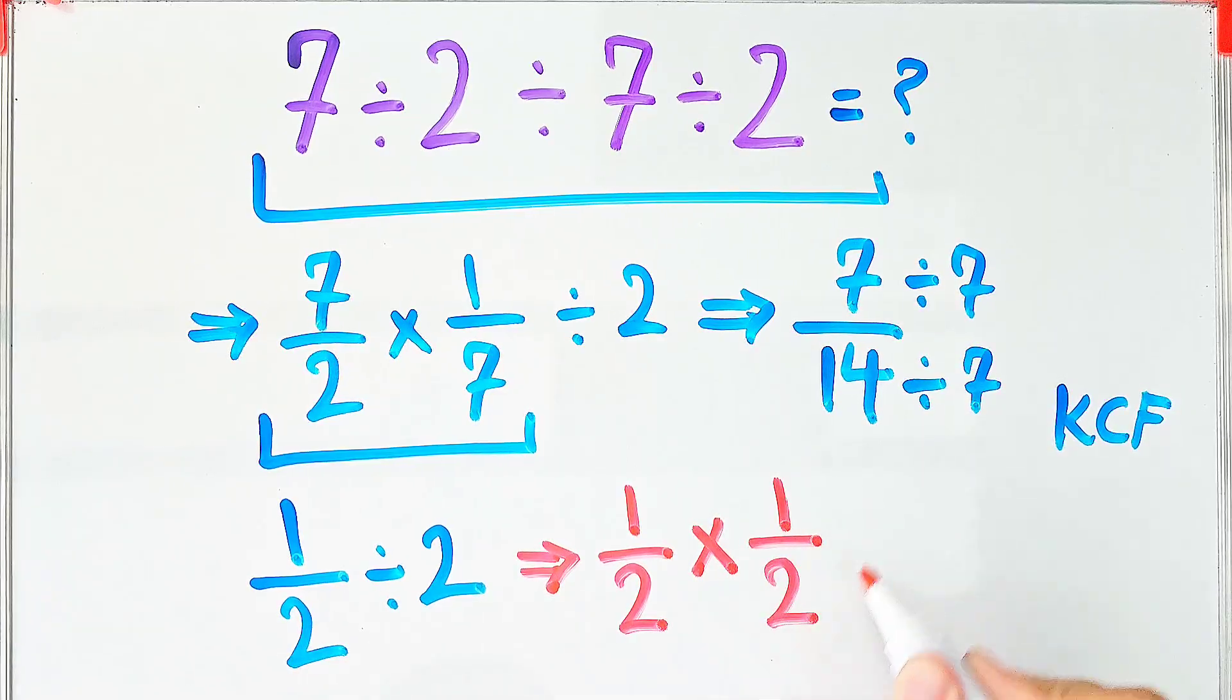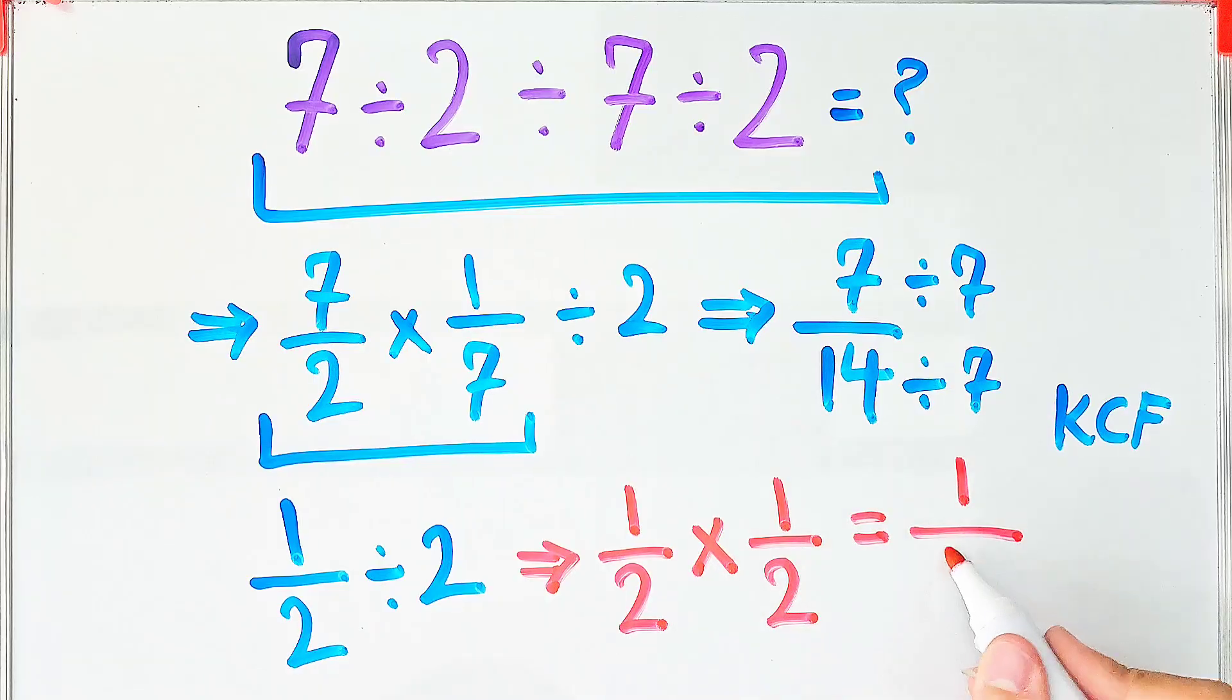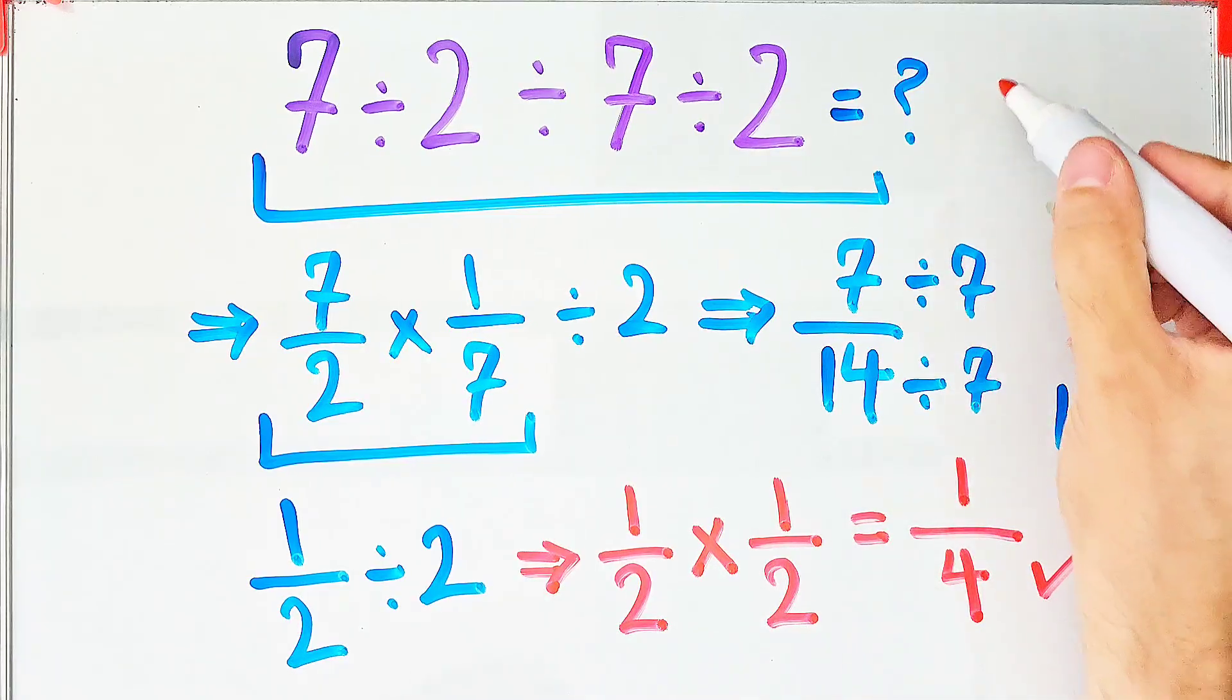Now we do the multiplication. 1 times 1 equals 1, and 2 times 2 equals 4. The final answer is 1 over 4.